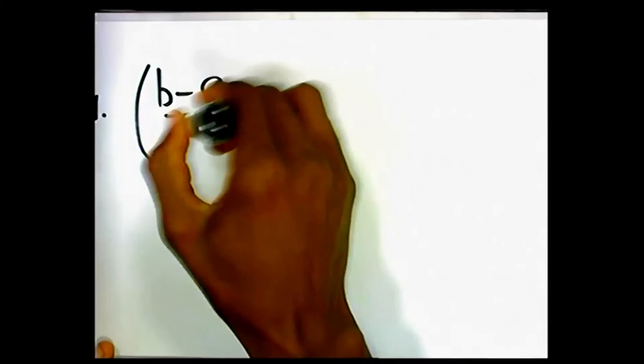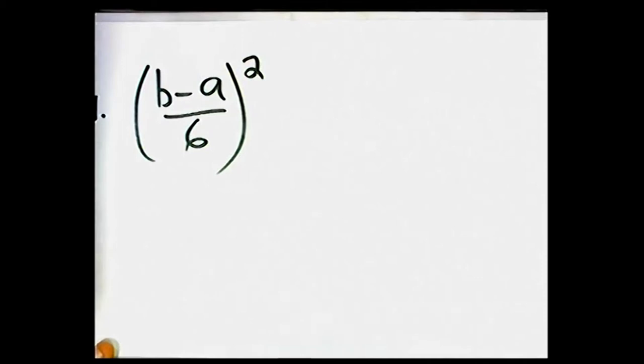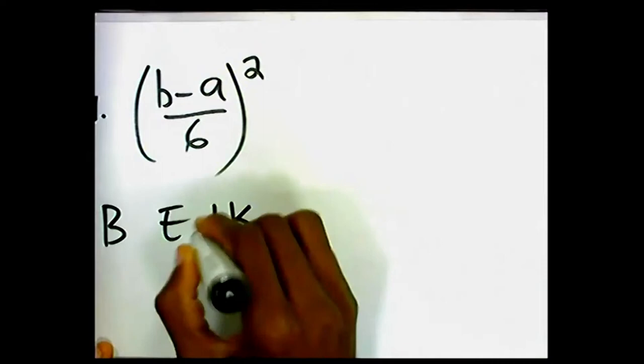So the only thing we don't have now is our standard deviation. And so all we're just going to do is, this is the formula to find the variance. We stated that b minus a all over 6 squared. So you just have to go for our critical activity, which was I think it was B, E, I, and K.